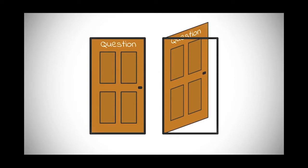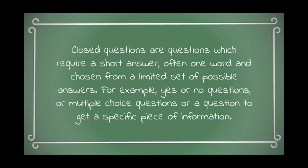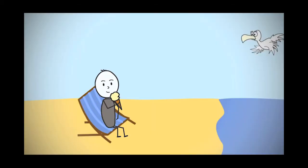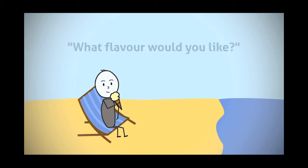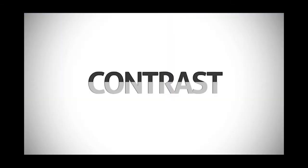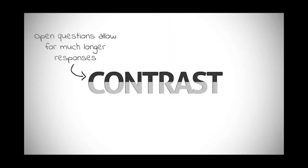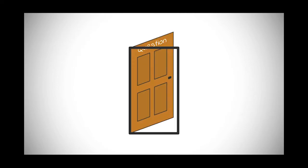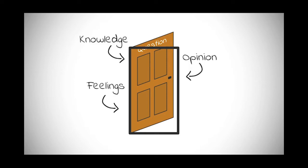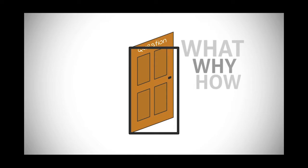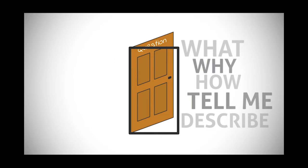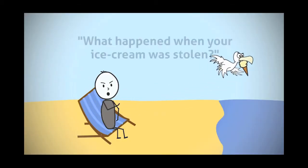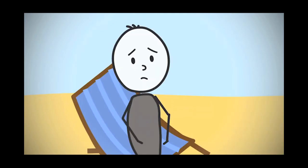Questions in their simplest form can either be open or closed. Closed questions require a short answer, often one word, chosen from a limited set — for example, yes or no questions, or a question to get a specific piece of information, like 'Would you like an ice cream?' or 'How much does it cost?' Open questions allow for much longer responses and potentially more creativity and information. They ask for the respondent's knowledge, opinion, or feelings, and usually begin with what, why, or how — for example, 'Tell me what happened when your ice cream was stolen.'